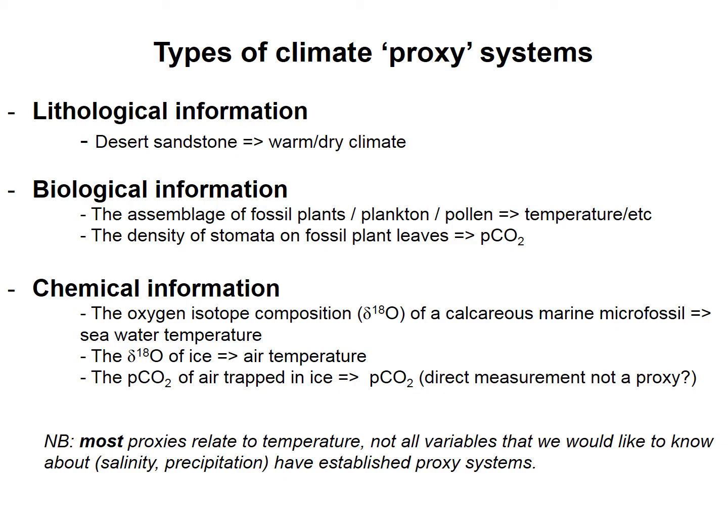There are a bunch of different classes of proxy types. Things like lithological information - you can look at the type of rock you find, usually sedimentary rock, and ask what kind of environment that rock would have formed in. For instance, most of you went to the Earth Dynamics field trip to Pease Bay. There was a red sandstone at the end of the beach - that would have formed in some kind of desert environment. So we can infer that at that time the climate was warm and dry.